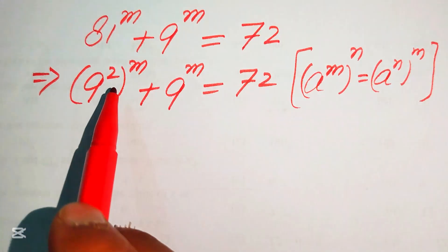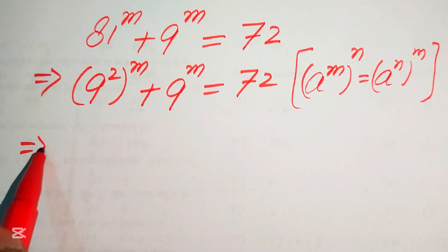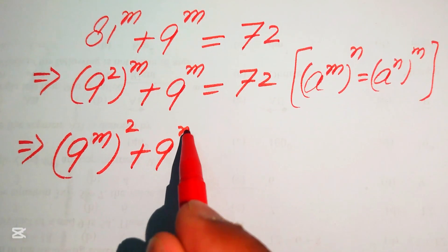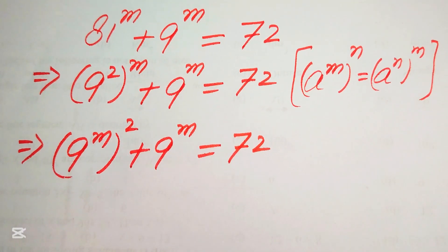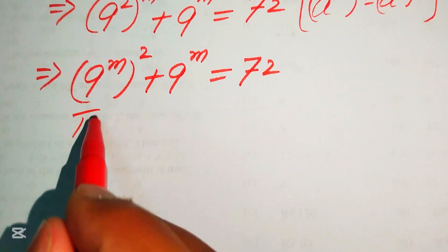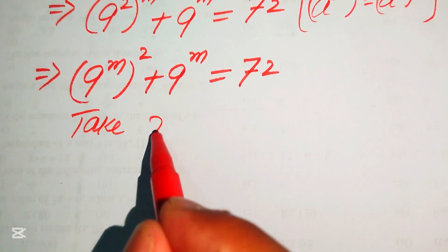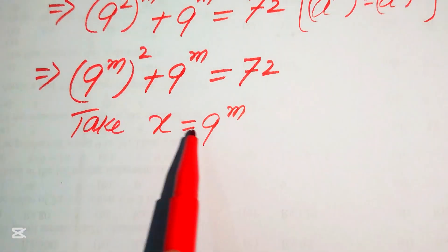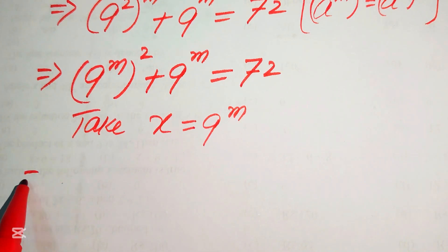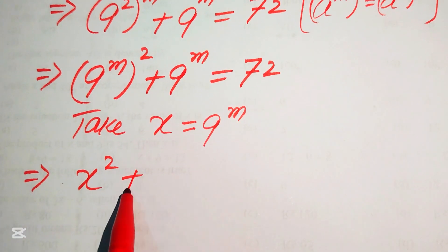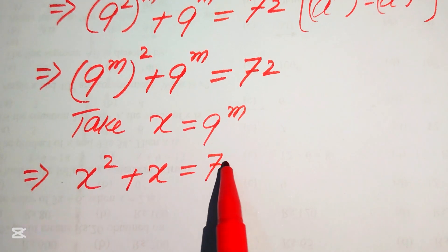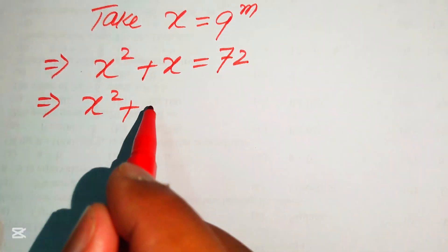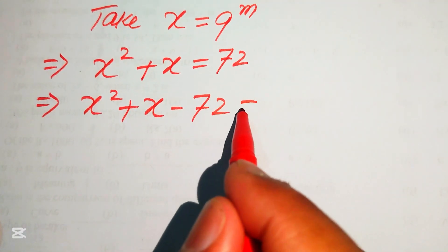According to this rule, we interchange the exponents and it becomes 9 to the power of m, whole squared, plus 9 to the power of m equals 72. Now we substitute x equals 9 to the power of m. This gives us x squared plus x equals 72, and moving 72 to the left side: x squared plus x minus 72 equals 0.